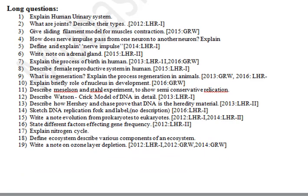The first important long question is: explain the human urinary system. What are joints — describe their types? Give the sliding filament model for muscle contraction. How does a nerve impulse pass from one neuron to another? Define and explain nerve impulse. Write a note on the adrenal gland.